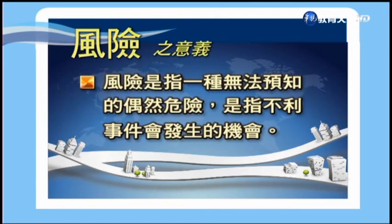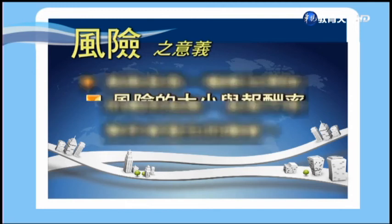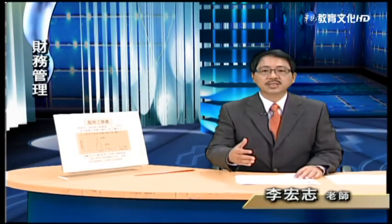投資人除了在投資活動中需注意所獲得的報酬率高低之外，其實還有隱含在投資標的中的風險。風險是指一種無法抑制的偶然風險，是指不利事件會發生的機會。通常風險的大小跟報酬率的高低是成正比的，也就是說投資的東西報酬率比較高的時候，它的風險也比較大。